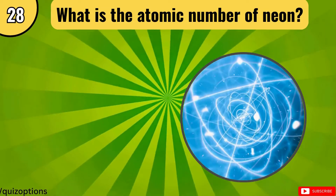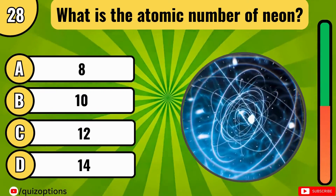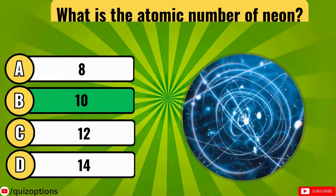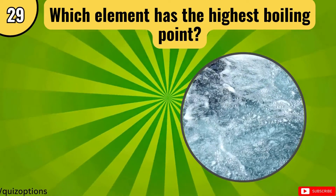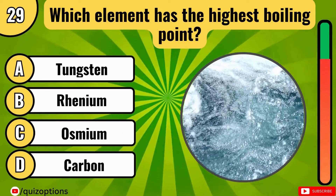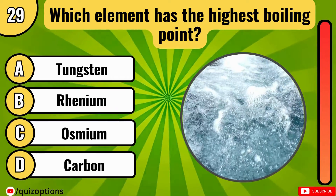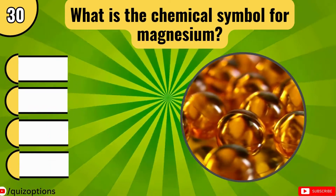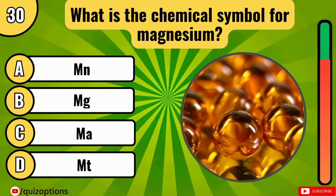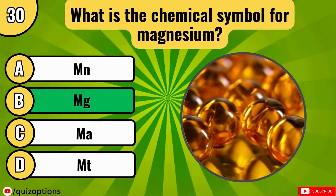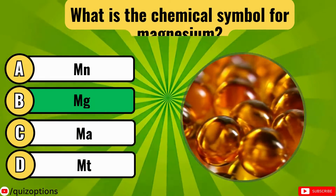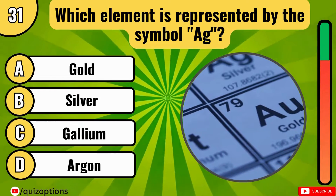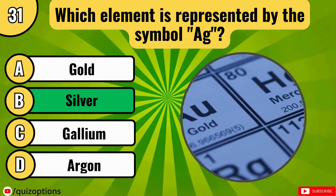What is the atomic number of neon? Which element has the highest boiling point? What is the chemical symbol for magnesium? Which element is represented by the symbol Ag? It's option B, silver.